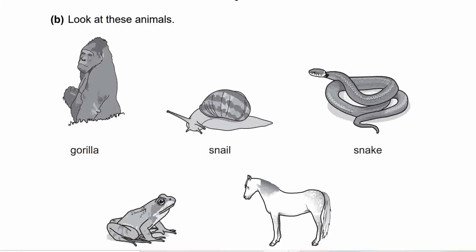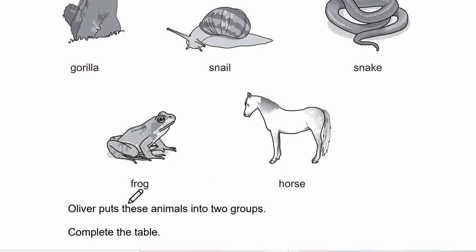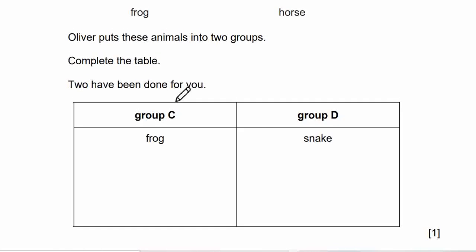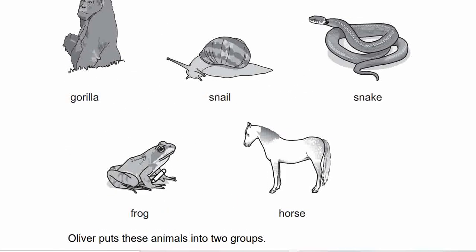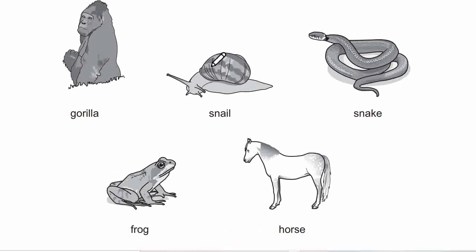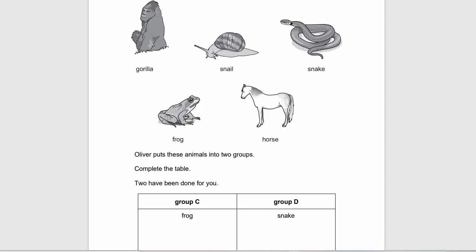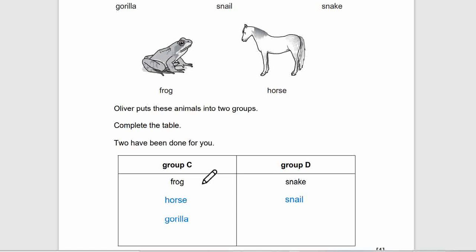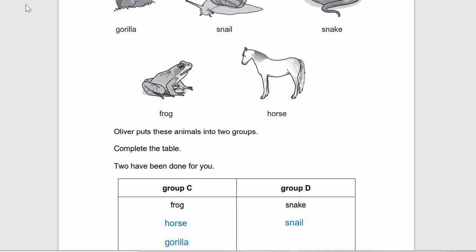Question B: look at these animals — gorillas, snails, snakes, frogs, horse. Oliver puts these animals into two groups. Two have been done for you: group C is frog, group D is snake. Frog has legs, snake doesn't have legs. So we group these into animals with legs and no legs. Gorilla and horse have legs — put them in group C. Snail doesn't have legs — group D. Frog, horse, and gorilla all have legs; snake and snail don't.